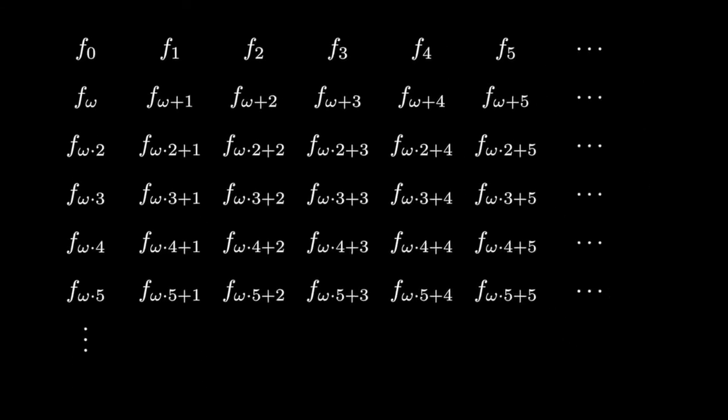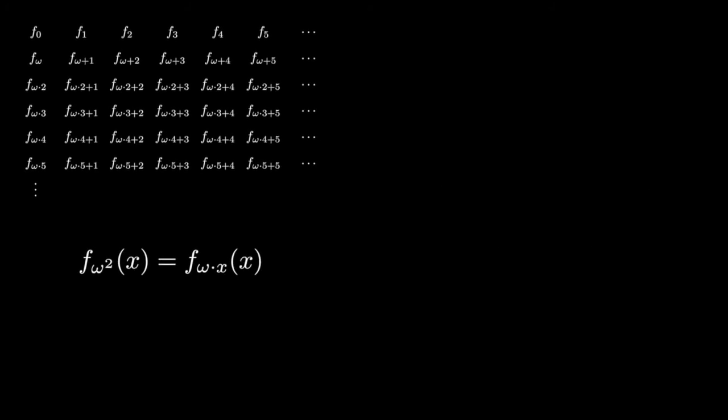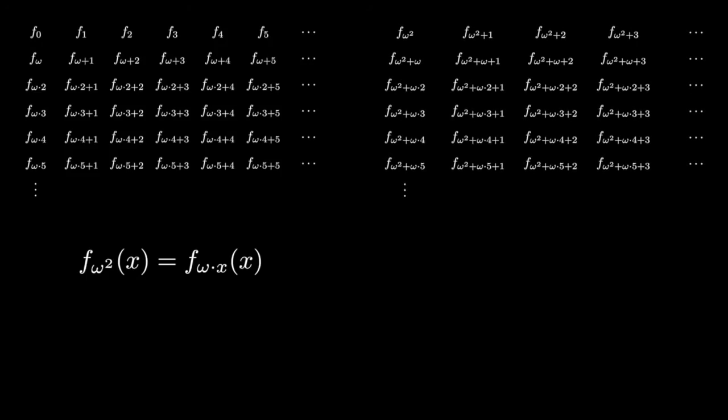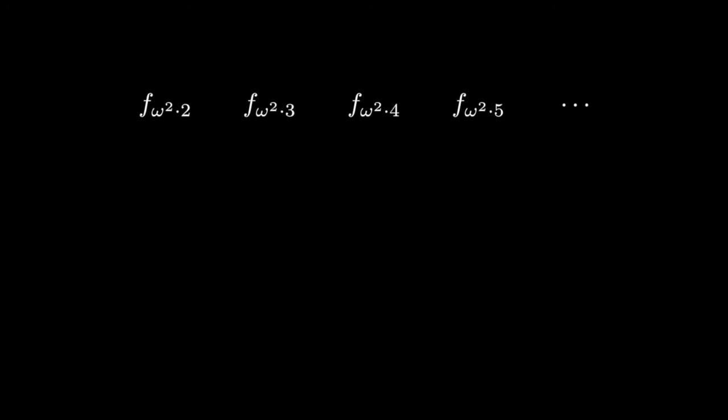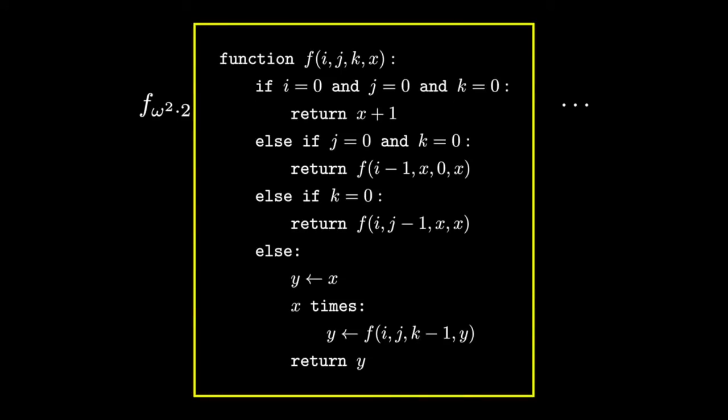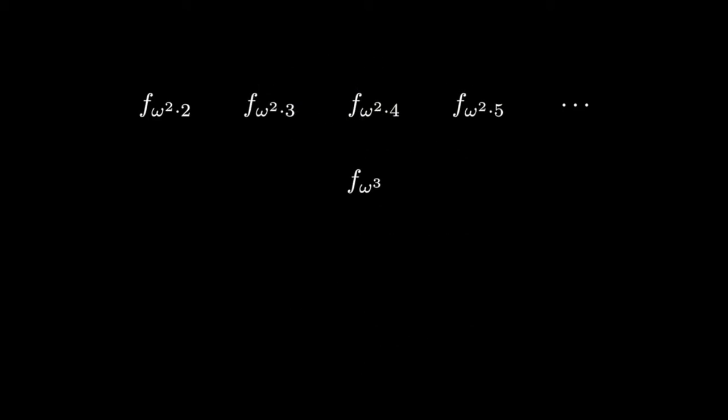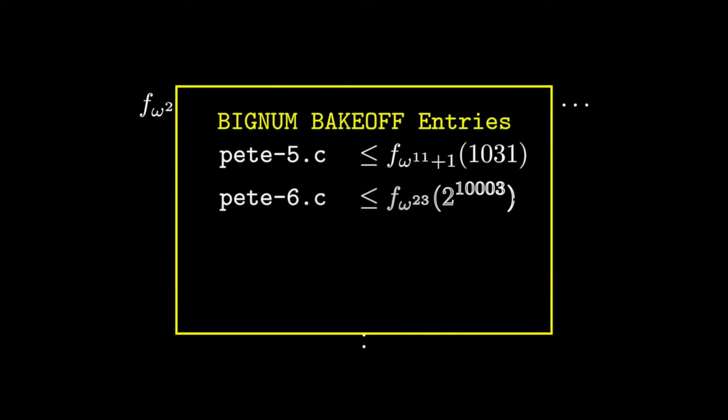Of course, it doesn't end here. We can define the limit f_omega squared, which grows faster than all of these, and then continue the fast-growing hierarchy to get another copy of omega squared, and then get more and more copies of it. And the limit of all these copies would be f_omega cubed. It's not hard to code f_omega cubed either. It's very similar to our previous code. And then there's omega to the 4 and so on that one can similarly come up with. Pete has two submissions, wherein he extends in the usual way the code for f_omega cubed, and manages to code the functions f_omega to the 11 and f_omega to the 23.